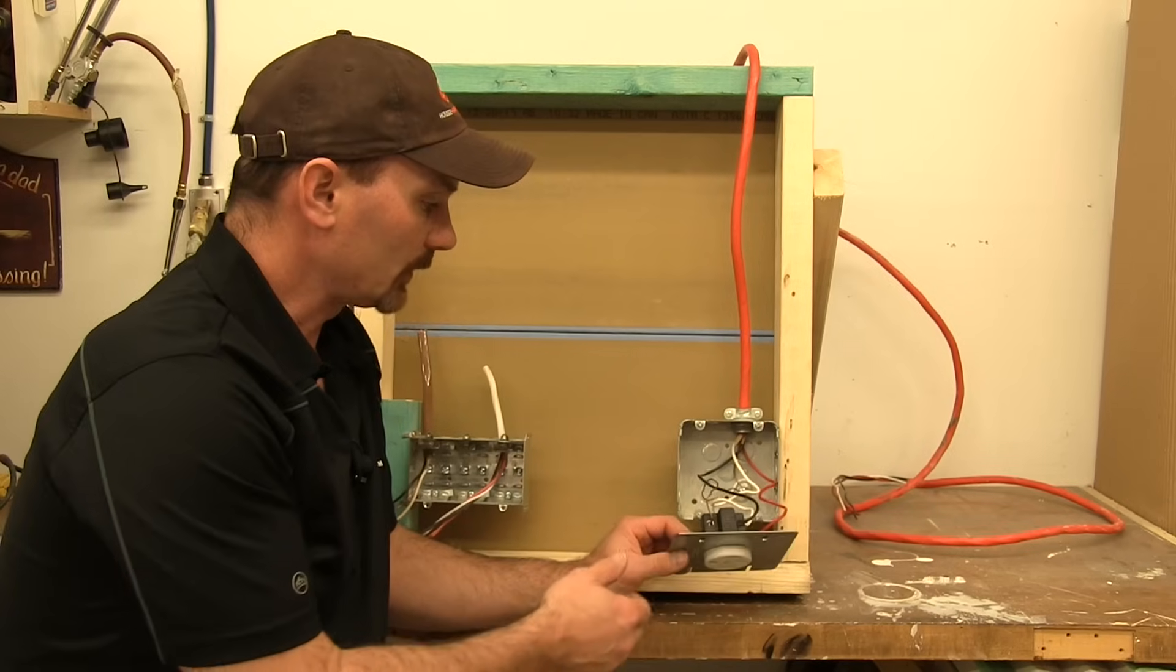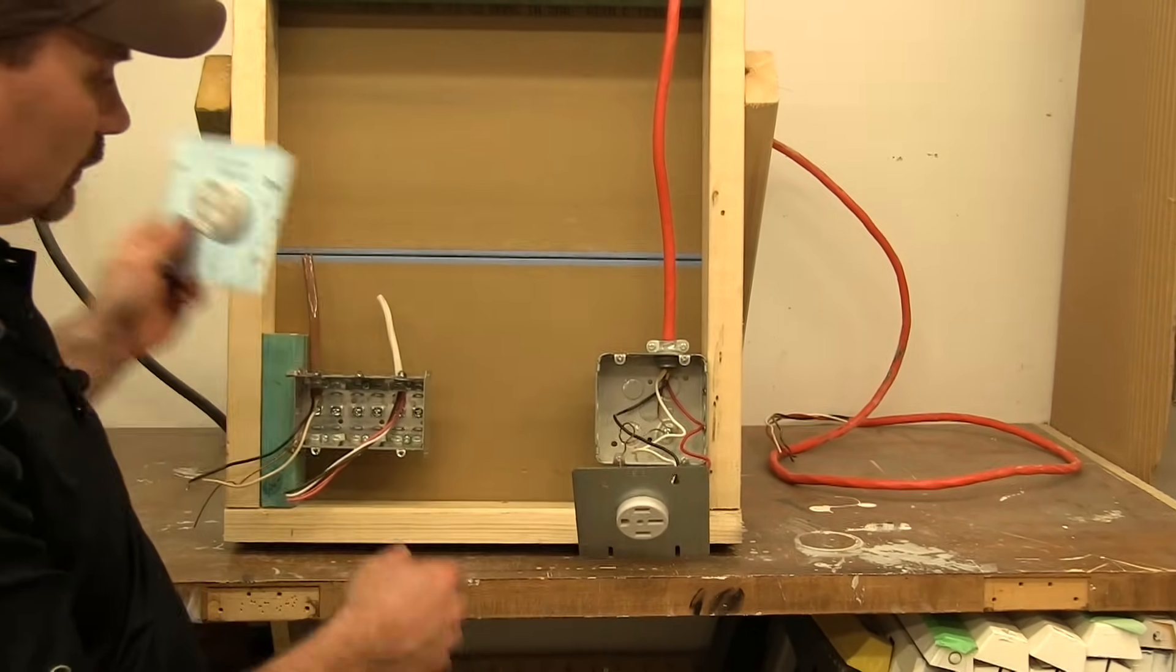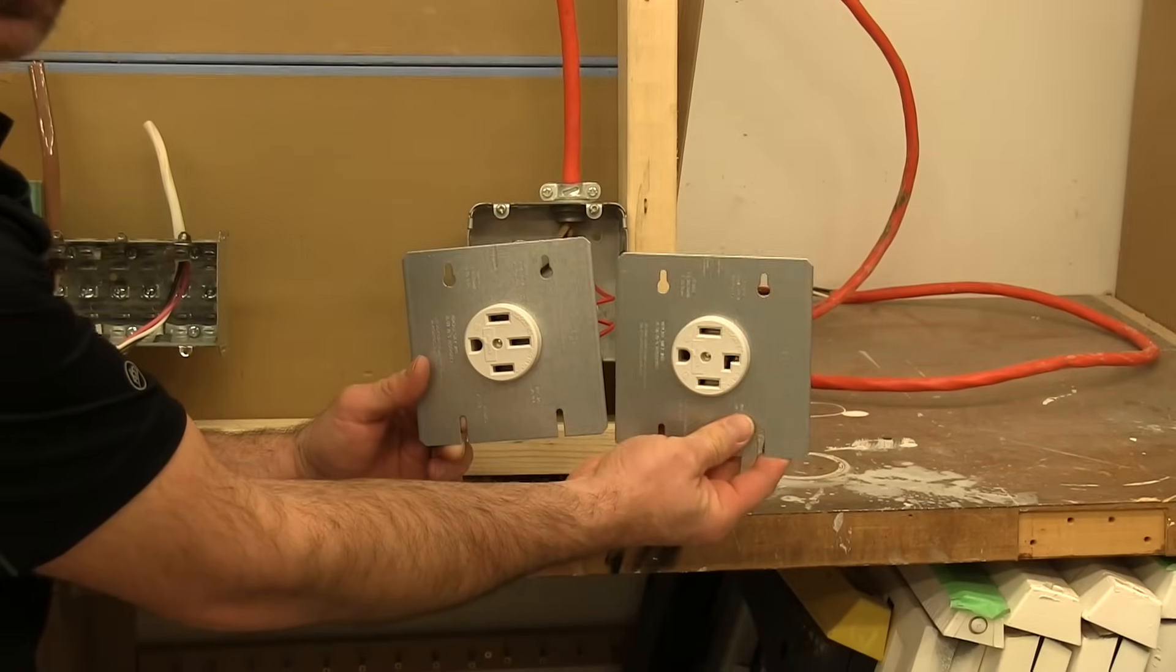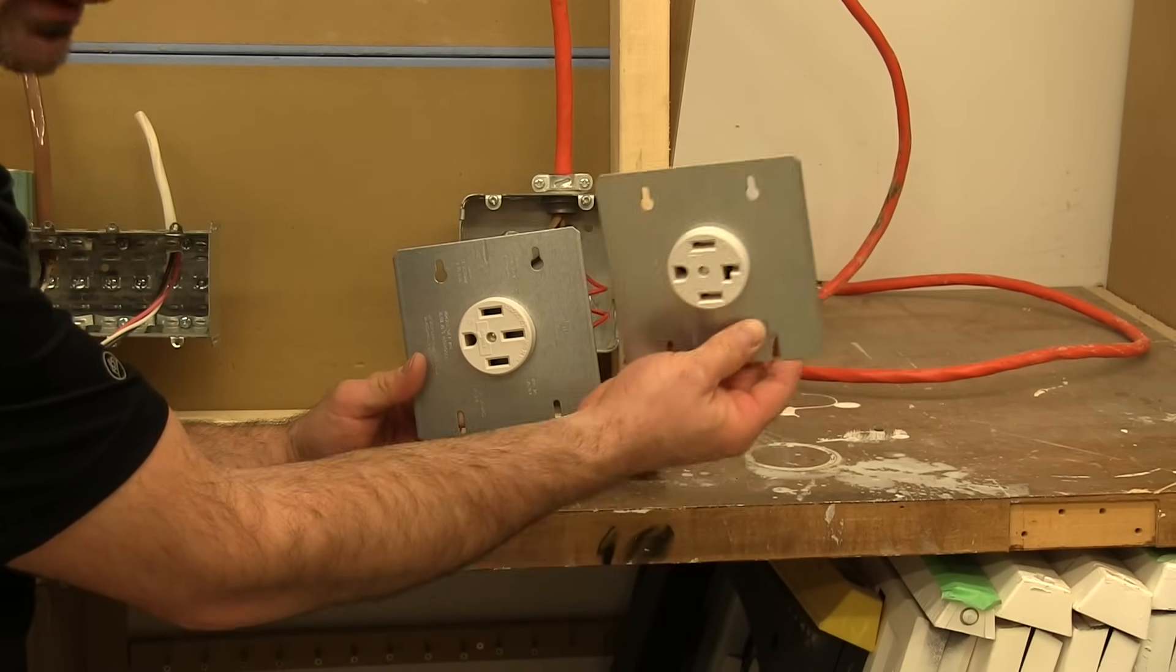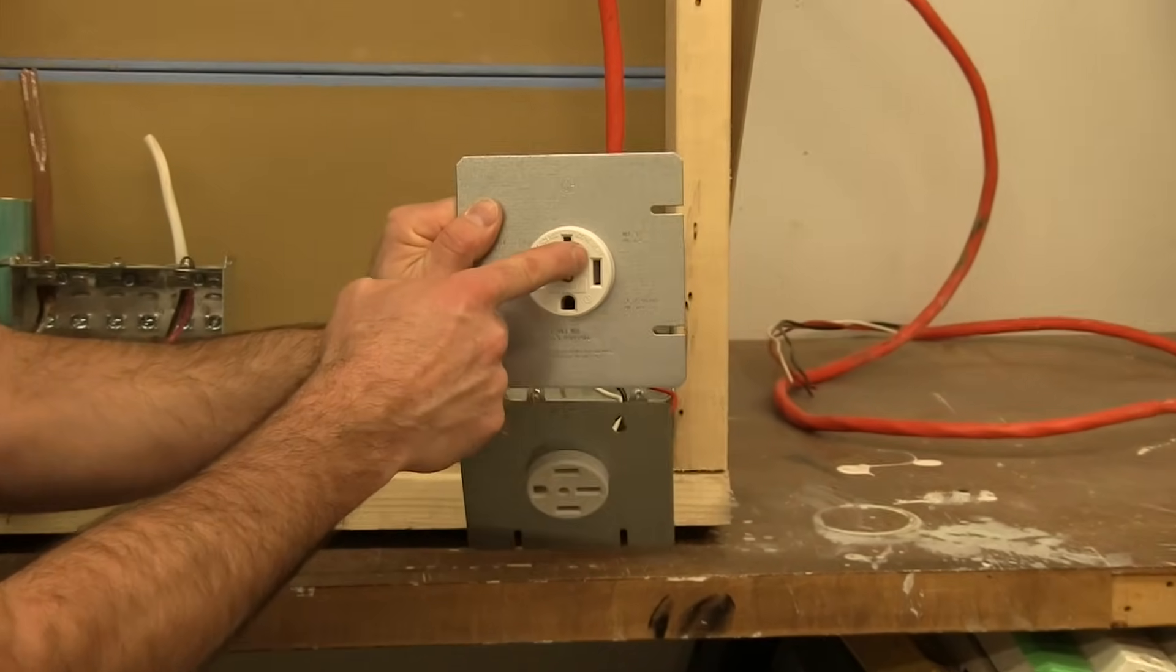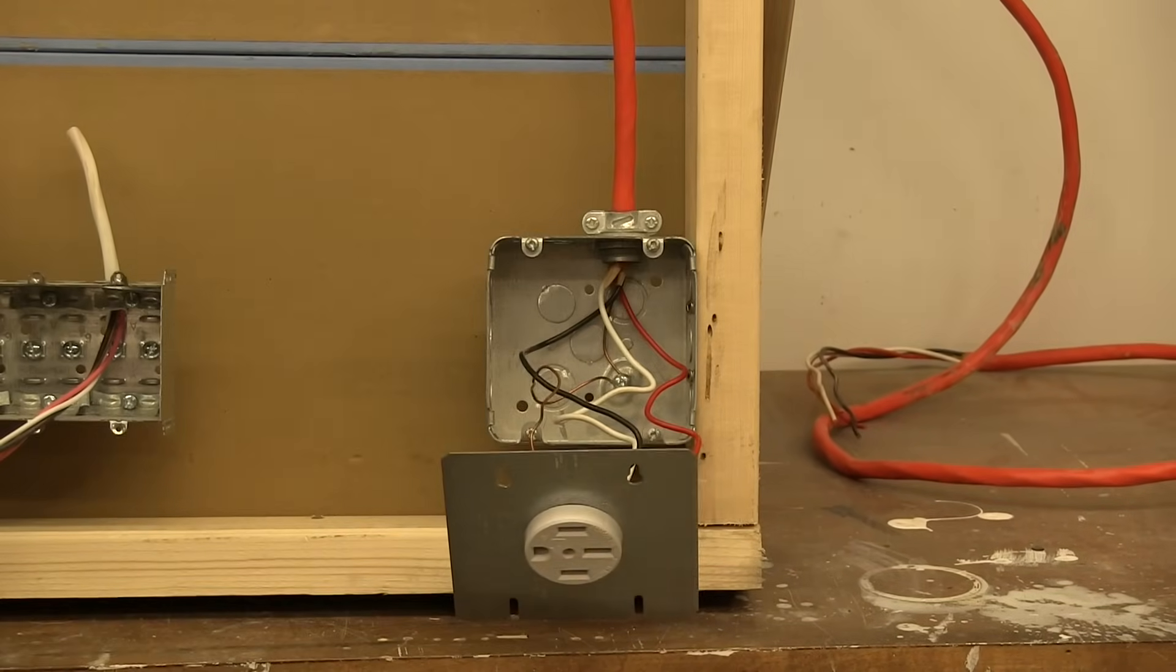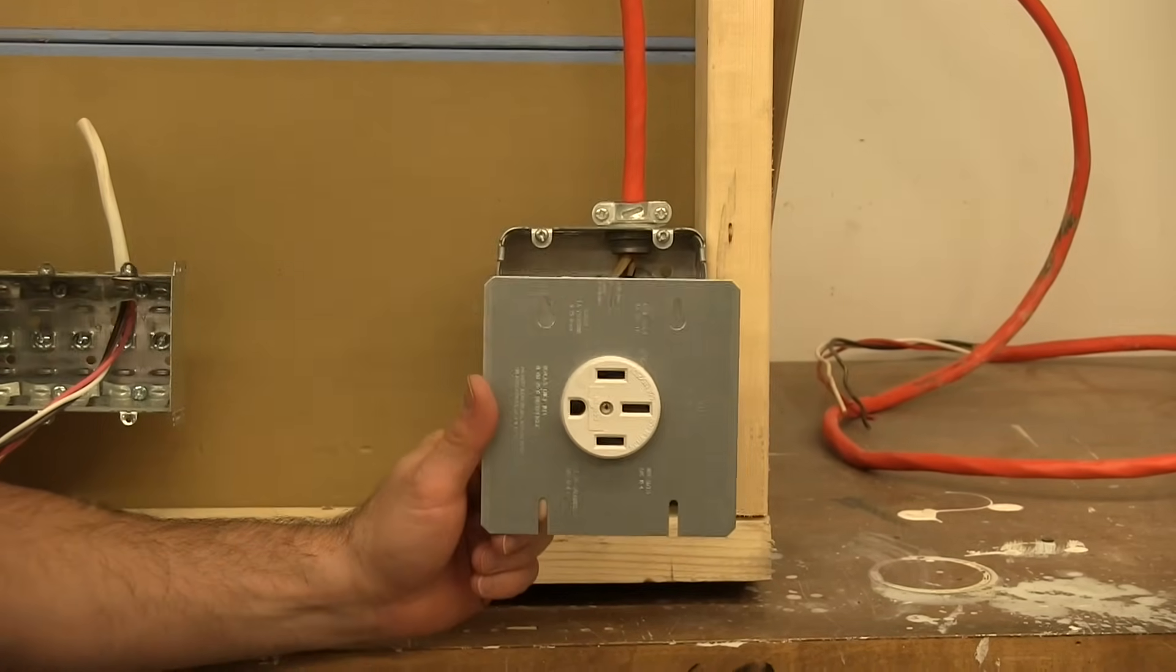So what we've got is the range receptacle which don't confuse it with your laundry dryer receptacle. They can look very similar if you don't have them side by side. Generally the packaging will tell you which is which, but on the laundry it's got this funny shaped plug. So if you think of the L for laundry, it's kind of your tip that this one is for your dryer and this one here is for your range, your stove.